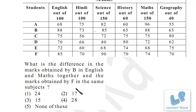The next question: what is the difference in marks obtained by B in English and Maths together, and the marks obtained by F in the same subjects? The first thought is to convert percentages into actual marks — but don't do that. It will be really time-consuming. You can solve this problem without even using paper and pen.